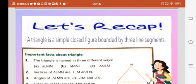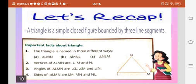Let's recap whatever we have done today. A triangle is a simple closed figure bounded by three line segments. A triangle can be named in three different ways. A triangle has three vertices, three angles, and three sides. Keep revising the concept to make it more clear. Have a nice day. Thank you.